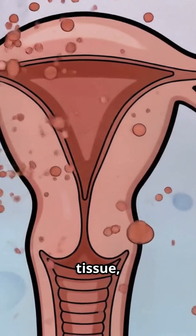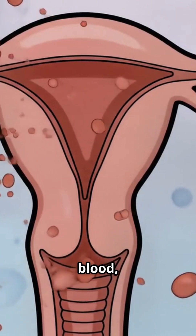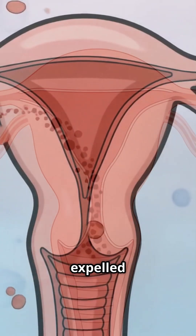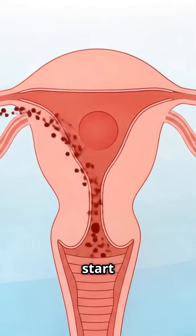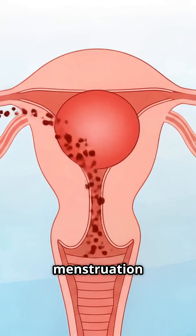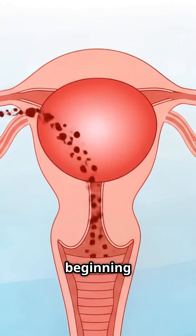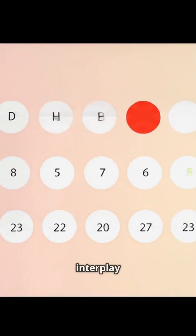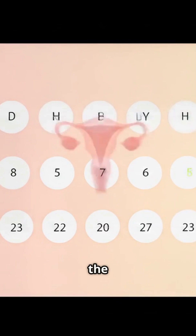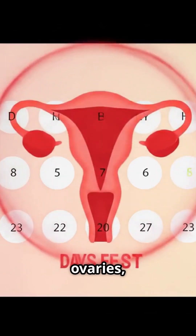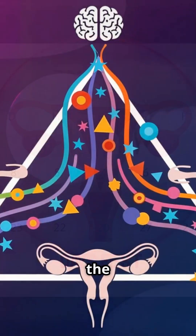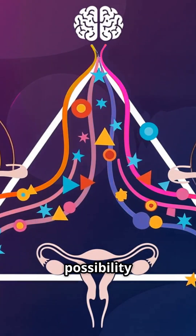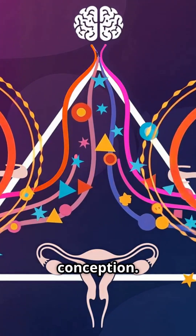The endometrial tissue, blood, and mucus are then expelled through the vagina, marking the start of menstruation and the beginning of a new cycle. This entire hormonal interplay between the brain, ovaries, and uterus ensures that the body regularly prepares for the possibility of conception.